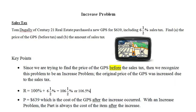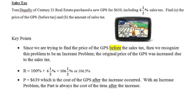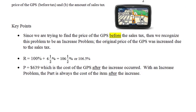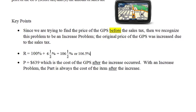The part is $639, and this is the cost of the GPS after the increase occurred. With an increase problem, the part is always the cost or amount of the item after the increase. So, base equals part divided by rate, which we can represent as P divided by R. Since this is an increase problem, it's a base problem—that's what we're trying to find.